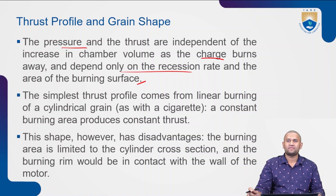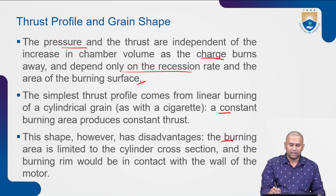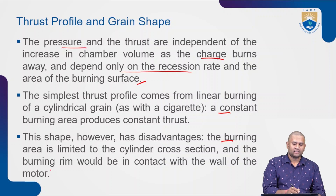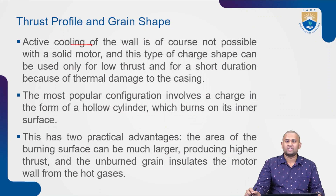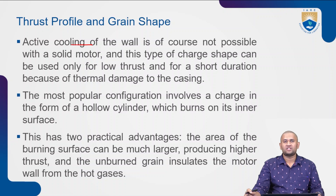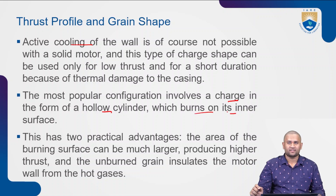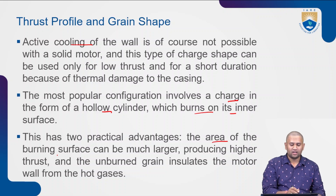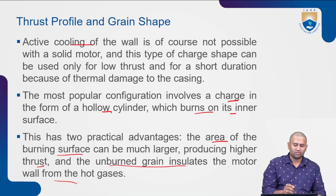The simplest thrust profile comes from linear burning of a cylindrical grain like a cigarette — a constant burning area produces constant thrust. However, this shape has disadvantages: the burning area is limited to the cylindrical cross section, and the burning rim would be in contact with the motor wall. Active cooling of the wall is not possible with a solid rocket motor, so this type of charge shape can only be used with low thrust and for a short duration due to thermal damage to the casing. The most popular configuration involves a charge in the form of a hollow cylinder which burns on its inner surface, offering two practical advantages: the area of burning surface can be much larger producing higher thrust, and the unburned grain insulates the motor wall from the hot gases.